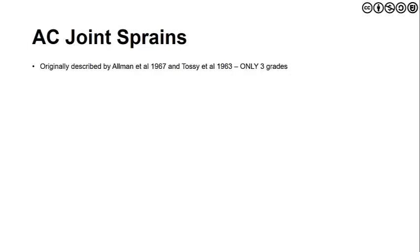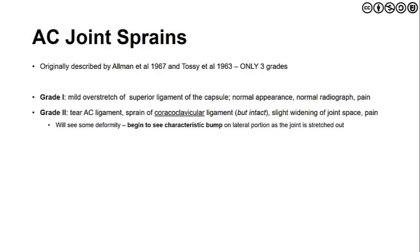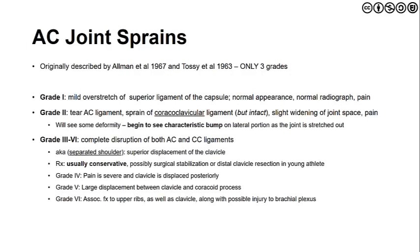AC joint sprains were originally described by Allman and Tossi in the mid to late 1960s, with three grades. Grade one is a mild overstretch of the superior ligament and capsule — the joint appears normal though pain is present. Grade two involves tearing of the AC ligament with a sprain of the coracoclavicular ligament that remains intact; we see laxity, widening of the joint space, and a step-off deformity. Since then, grades four, five, and six have been suggested, though treatment doesn't look very dissimilar — it's more radiographic imaging and findings that differentiate those grades. We'll stick with three grades.